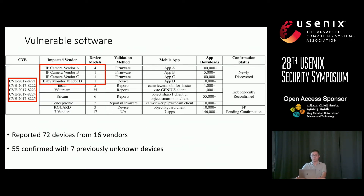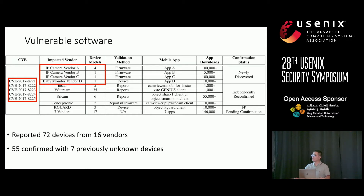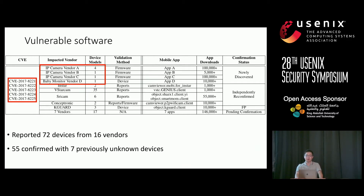One case involves vulnerable software: five CVEs describe a vulnerable web server on P2P cameras reported about two years ago, so we expected fewer results after patching. However, our platform found over 70 potentially vulnerable devices, and we validated 55. Interestingly, we found seven devices previously unknown to be vulnerable to this weakness. We contacted vendors and found three working on patches, with one asking to have their name on the report.